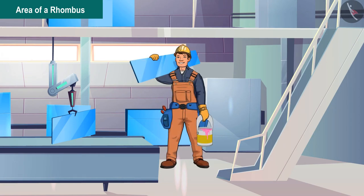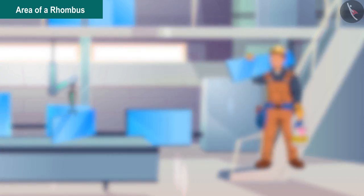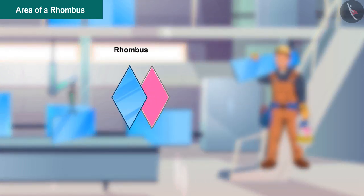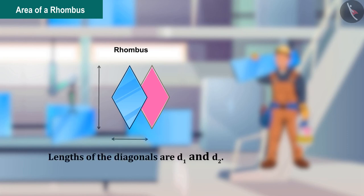He wants to paint pink color behind the glass. If the lengths of the diagonals of the glass are d1 and d2, can you tell him how much area of the glass will have to be painted?